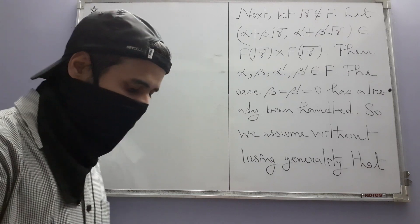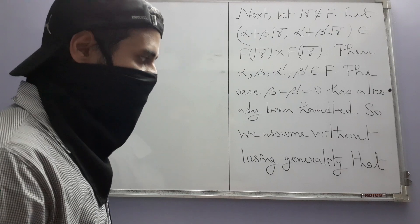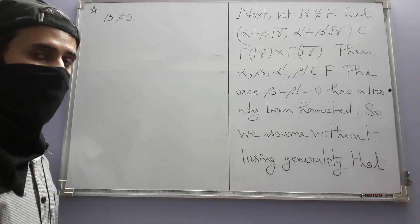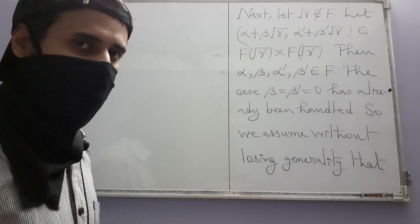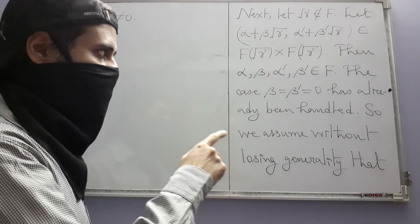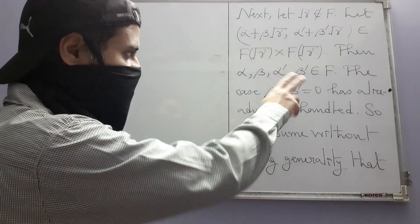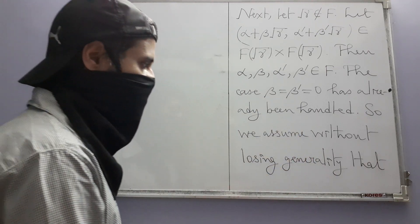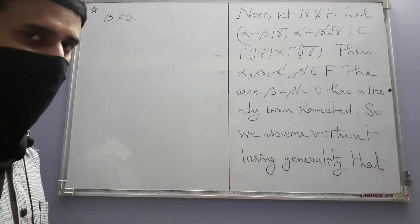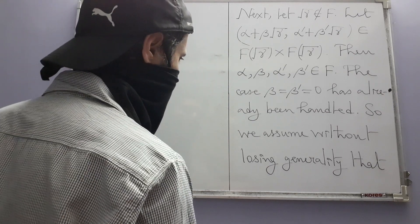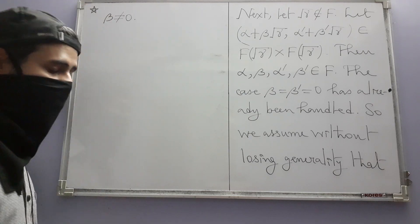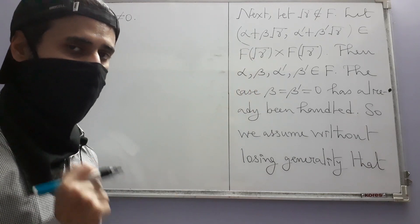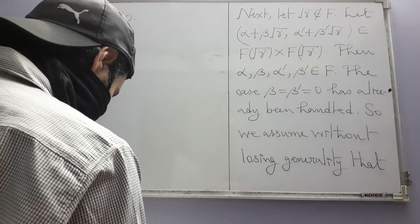The other case where beta prime is non-zero is similar to this one. If you want to see what the corresponding things will be in the case where beta prime is not equal to zero, you are welcome to work that out. The other case can be similarly handled. So let's see the actual thing.